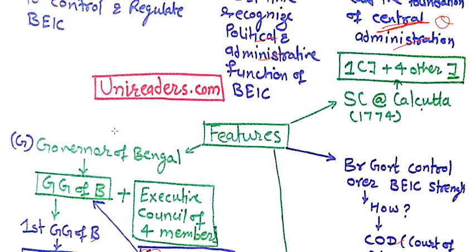The second important feature is related to the Supreme Court. A Supreme Court was set up at Calcutta in 1774, with one Chief Justice plus four other justices.